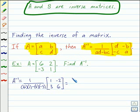Let's simplify this expression now. On the bottom of our fraction, we have 6 times 1, which is 6, minus 2 times negative 3, which is negative 6. We still have the same matrix.